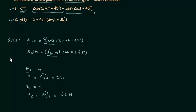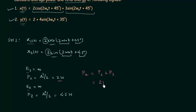x1(t) and x2(t) are orthogonal signals because sine and cosine functions with the same frequency and same phase are orthogonal. From the property of orthogonal signals, the average power of the composite signal x(t) is px = p1 + p2 = 2 + 4.5 = 6.5 watts.